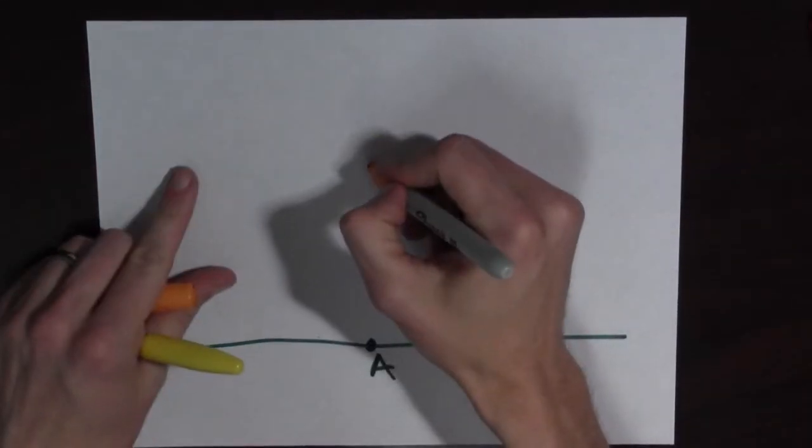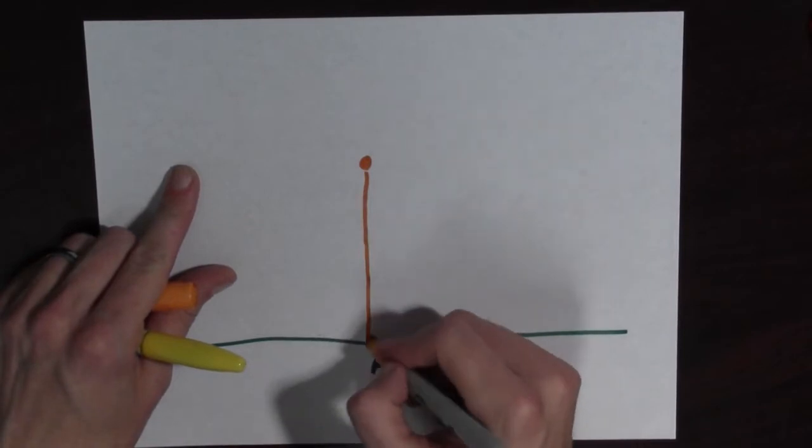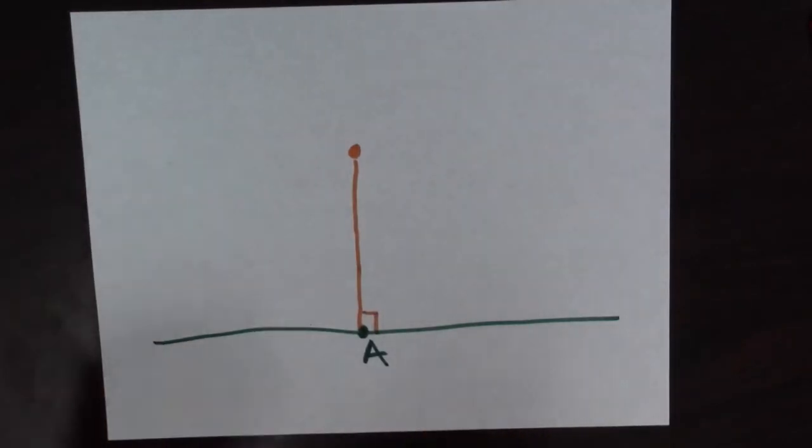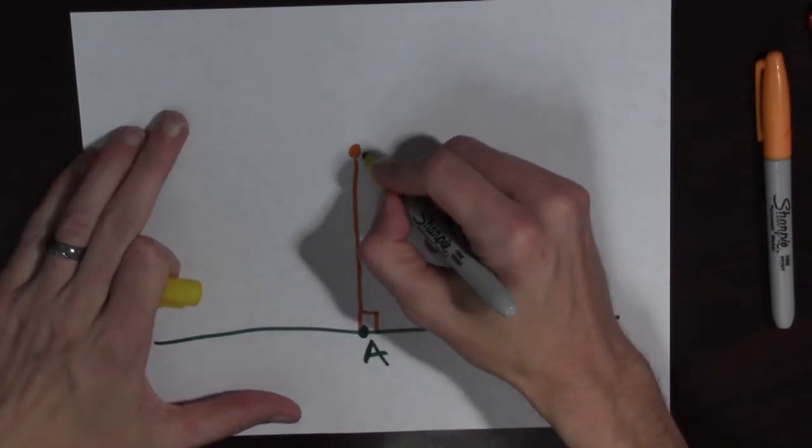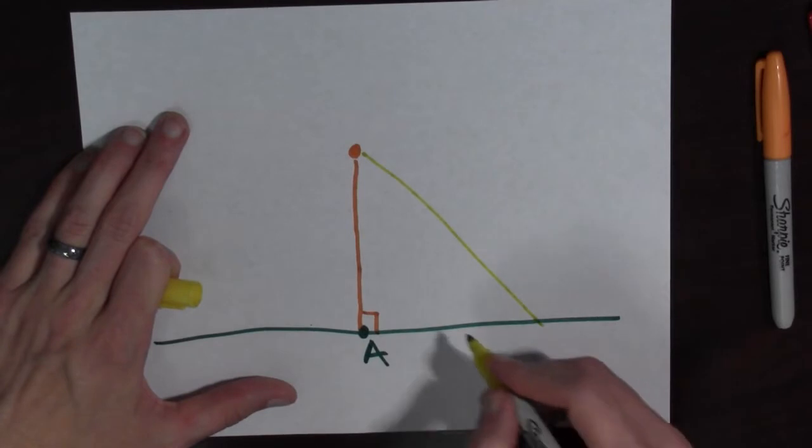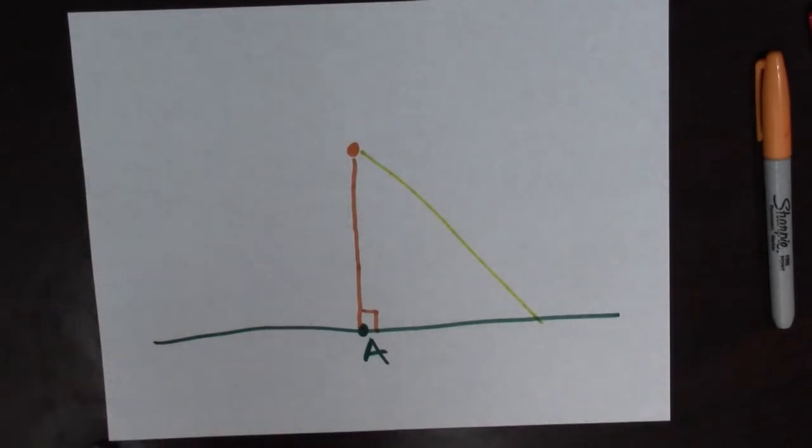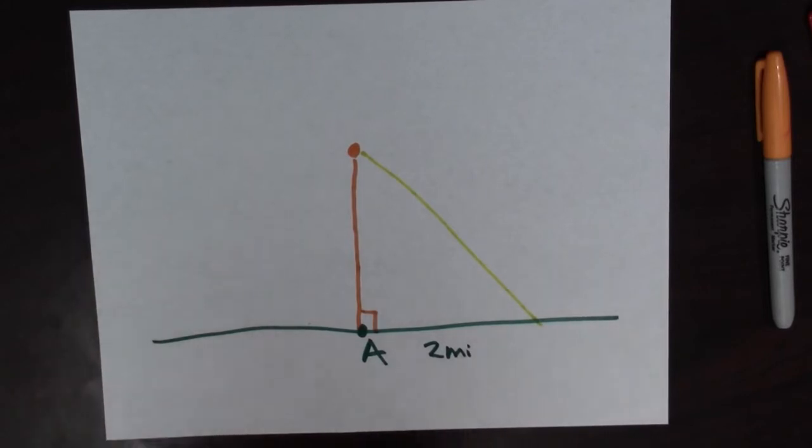and we have a beacon out there some place. The beacon is going to be here and A is the closest point to the beacon which means that this makes a right angle and the beacon has some light that it's shining. The light that it's shining is two miles away from A. So here we have two miles.